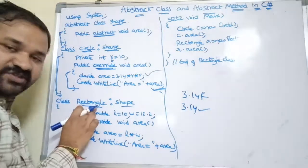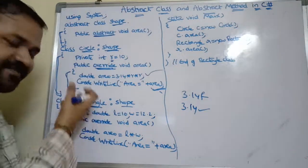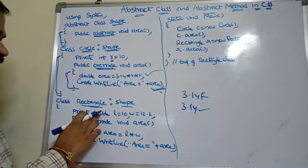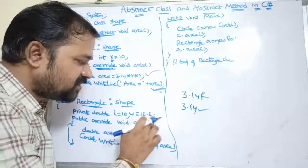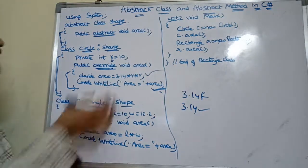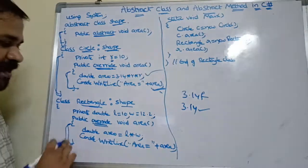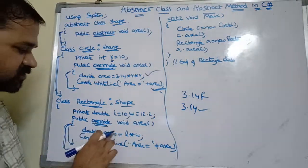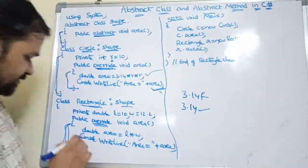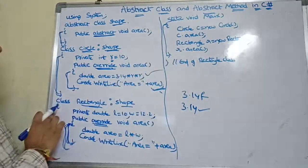Next is the Rectangle class, which is also a derived class derived from the base class Shape. We are calculating the area of the rectangle — the formula is length multiplied by width. Here private double length = 10 and width = 1.10. In this method we override the Area method: public override void Area(). The implementation is: double area = length * width, then Console.WriteLine("Area = " + area). After the method definition, we define the main method inside the Rectangle class.